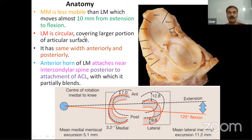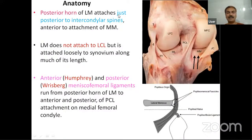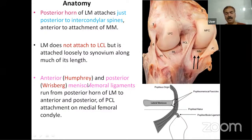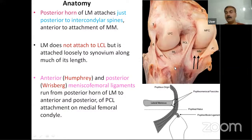The lateral meniscus is circular, covering a larger portion of the articular surface. The width of its anterior and posterior parts is almost similar. The anterior horn of the lateral meniscus attaches near the intercondylar spine, posterior to the ACL attachment, while the posterior horn attaches to the posterior intercondylar spine, anterior to the medial meniscus attachment. The lateral meniscus is loosely attached to the synovium. There are two meniscofemoral ligaments — the Humphrey and Wrisberg ligaments — arising from the posterior horn of the lateral meniscus, passing anterior and posterior to the PCL respectively, attaching to the medial femoral condyle.